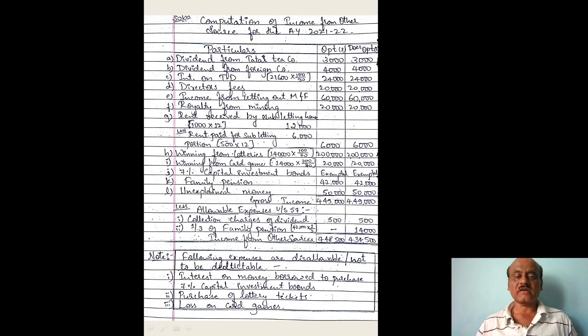Director's fees: Rs. 20,000. Income from letting out machinery and furniture — composite rent: Rs. 60,000.